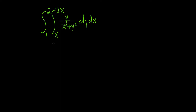In this video we're going to evaluate this iterated integral. We have the integral from 1 to 2, and then from x to 2x of y over x squared plus y squared, dy dx. Because we see a dy here, we first have to integrate with respect to y. So we have y over x squared plus y squared.